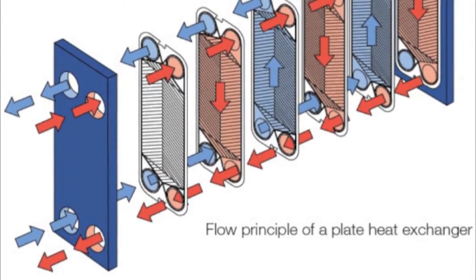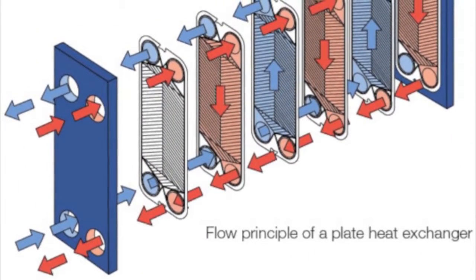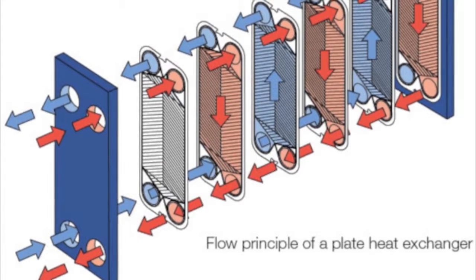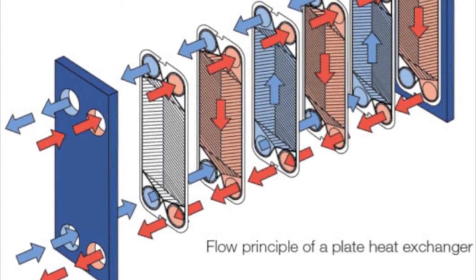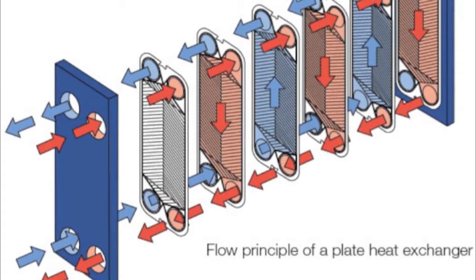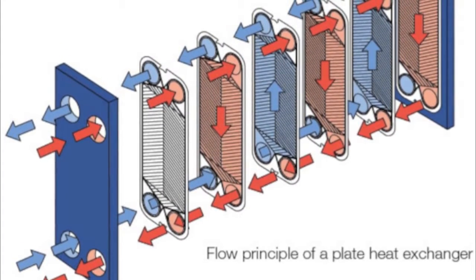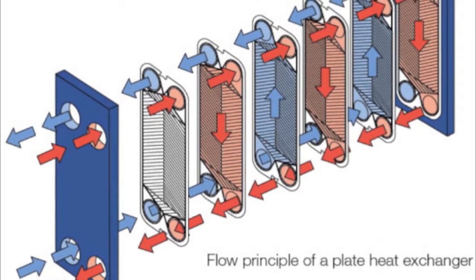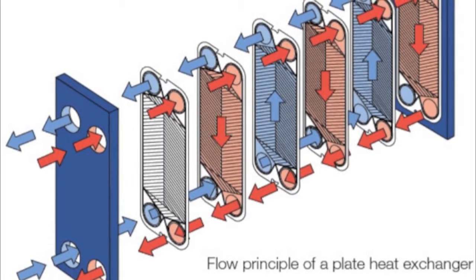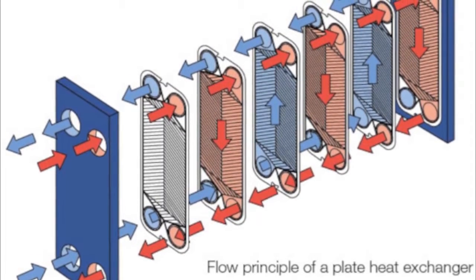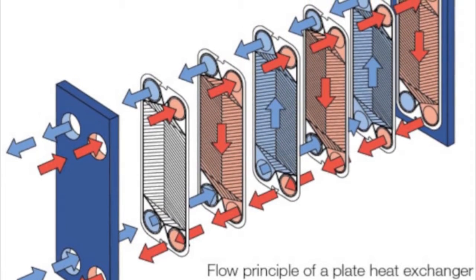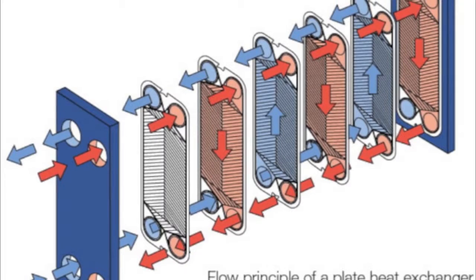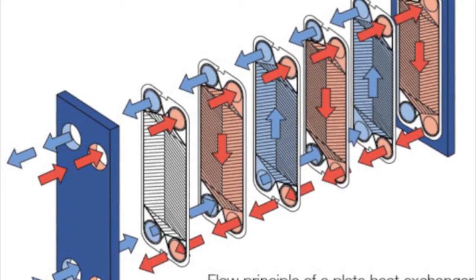Let's take a look inside the heat exchanger. Plate type heat exchangers operate using counterflow, meaning the hot and cold fluids flow in opposite directions. As shown in the diagram, the plates are arranged in such a way that the flow bounded by each successive plate alternates between hot fluid and cold fluid.